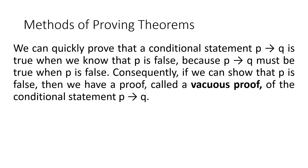We can quickly prove that the conditional statement p implies q is true when we know that p is false, because p implies q must be true when p is false. Consequently, we can show that p is false using a proof called a vacuous proof of the conditional statement p implies q. Vacuous proofs are often used to establish special cases of theorems that state that a conditional statement is true for all positive integers.